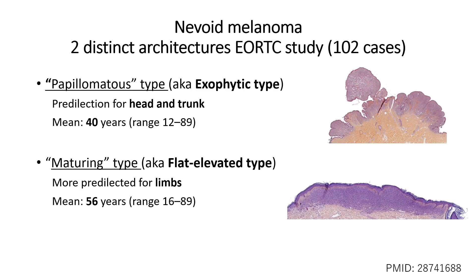There was a large study from the ERTC a couple of years ago that described two distinct architectures. One is the papillomatous type, which we also refer to here as the exophytic type. In this study, there was a predilection of this type for the head and trunk, and these tumors were mainly found in adults.